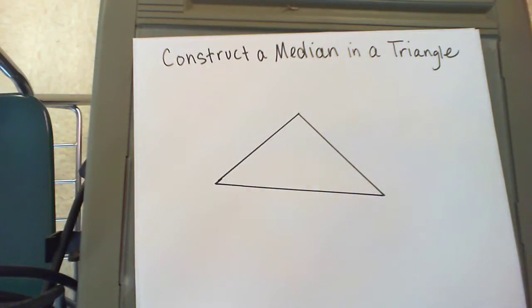To construct a median in a triangle, you need to first find the midpoint of one side and then connect that to the vertex of the triangle.